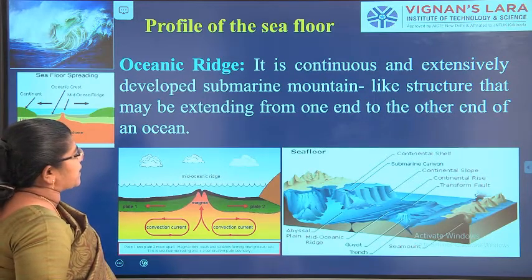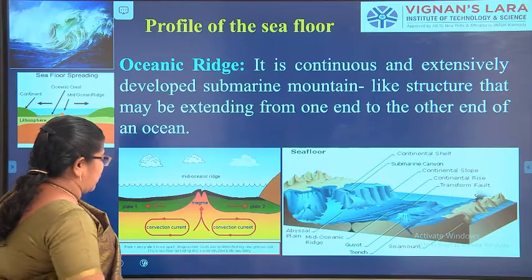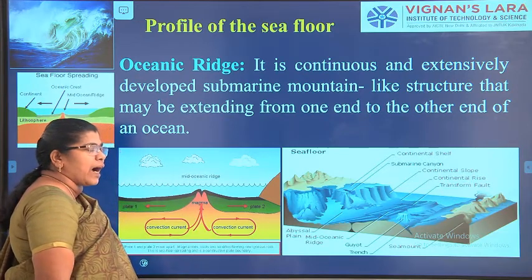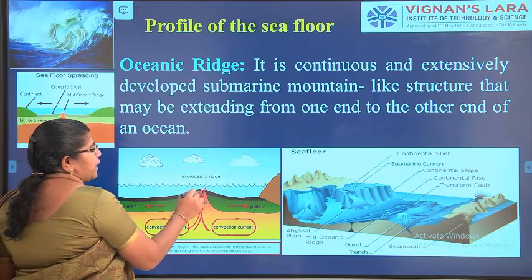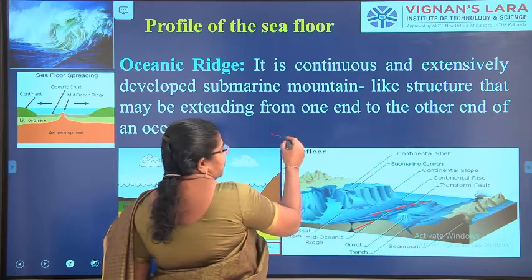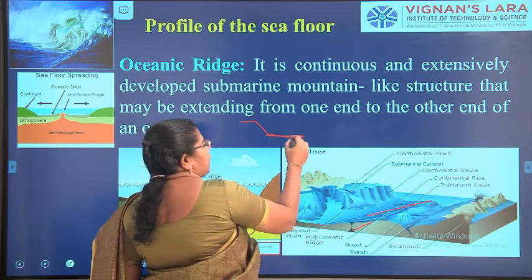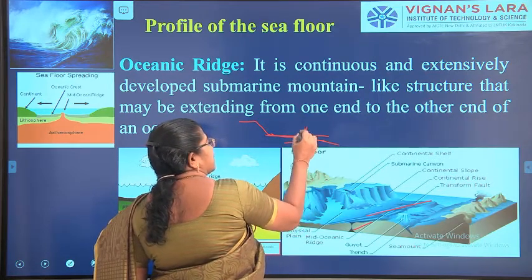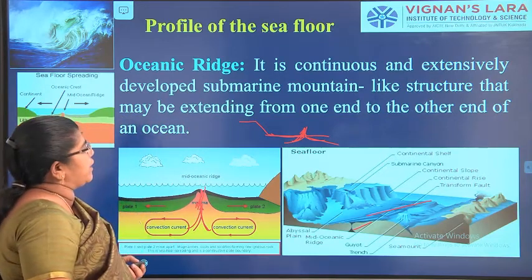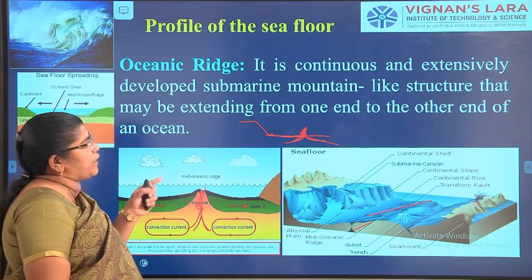The next feature is the oceanic ridge. It is a continuous and extensively developed submarine mountain-like structure that may extend from one end to the other end of the ocean. It is formed due to convection currents — the magma at the bottom part of the earth tries to move outward, making the formation of the ridge. This is called the mid-oceanic ridge. After the abyssal plain, due to this magma movement, there will be a ridge formation throughout.